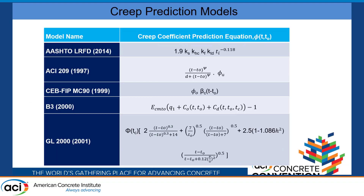Here are the prediction models used to compare creep in this study. AASHTO was the main focus as it's in-spec, but we also looked at ACI-209, the B3 model, the FIB, and the GL2000. As mentioned, all of them account for age, time of loading, shape through the volume-to-surface ratio, humidity, and compressive strength.